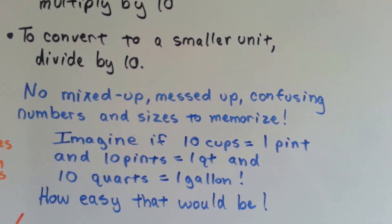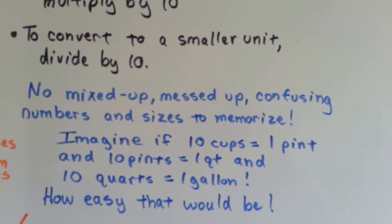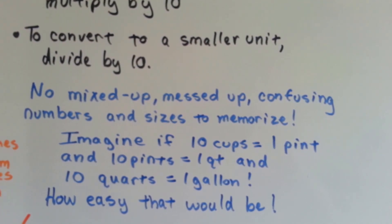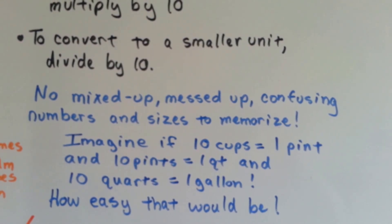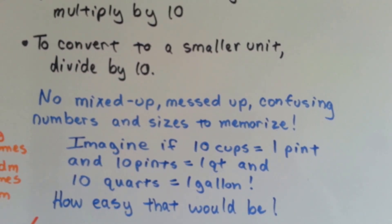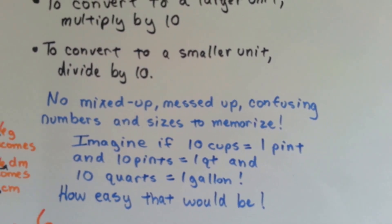Imagine if 10 cups equal the pint instead of 2 cups, or 10 pints equal the quart instead of 2 pints, and 10 quarts equal the gallon instead of 4 quarts. How easy that would be, because we wouldn't have 2s and 4s and 8 ounces to memorize. We would just have 10s. Wouldn't that be easy?